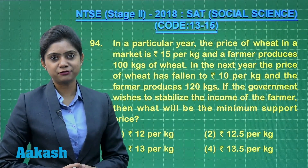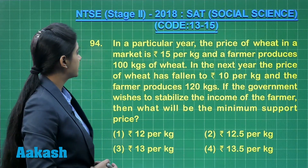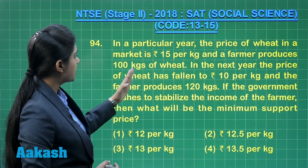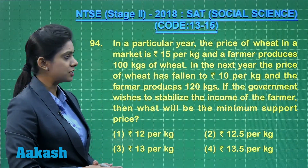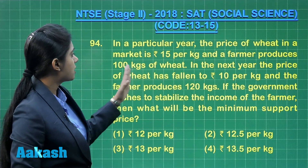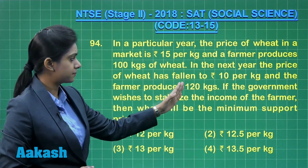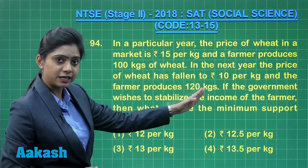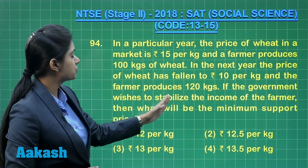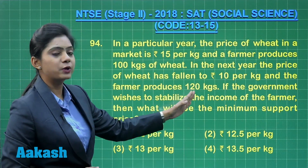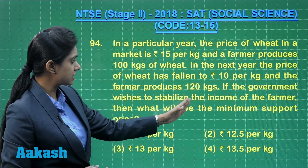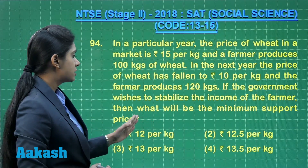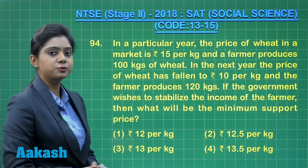Now let's begin question number 94. In a particular year the price of wheat in the market is rupees 15 per kg and a farmer produces 100 kgs of wheat. In the next year the price of wheat has fallen to rupees 10 per kg and the farmer produces 120 kgs. The question is: if the government wishes to stabilize the income of the farmer, what will be the minimum support price?